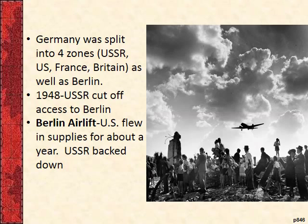Berlin is in the Russian occupation zone and is itself split into different sectors. Eventually the US, French, and British zones are consolidated into one — West Berlin. The problem is that West Berlin is completely surrounded by East Germany. A lot of people from East Germany were fleeing into West Berlin. West Germany was economically doing better than East Germany, which looked bad for communism and the Soviet Union.